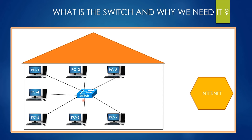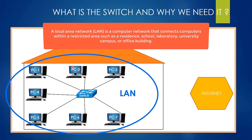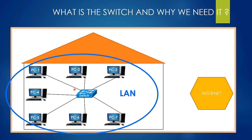This means that they created a network. The reason these computers can communicate with each other is that all of them are in the same network. We call this special network a Local Area Network, or briefly LAN. A local area network is a collection of devices connected together in one physical location, such as a building, office, or home. To create a LAN, this location must be a restricted area — you cannot create a LAN between computers in the United States and computers in Russia.